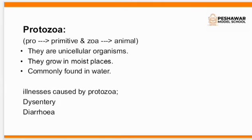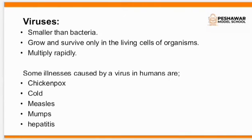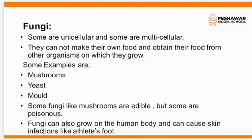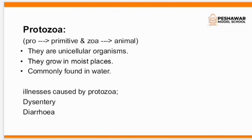Let me add something. The singular form of bacteria is 'bacterium.' Remember, we use 'bacteria' for the plural form, but for singular we say 'bacterium.' The singular form of fungi is 'fungus,' and the singular form of protozoa is 'protozoan.' So today we have discussed microorganisms and all four main kinds: viruses, bacteria, protozoa, and fungi. Inshallah, in the next lesson I am going to explain the next topic of this unit.